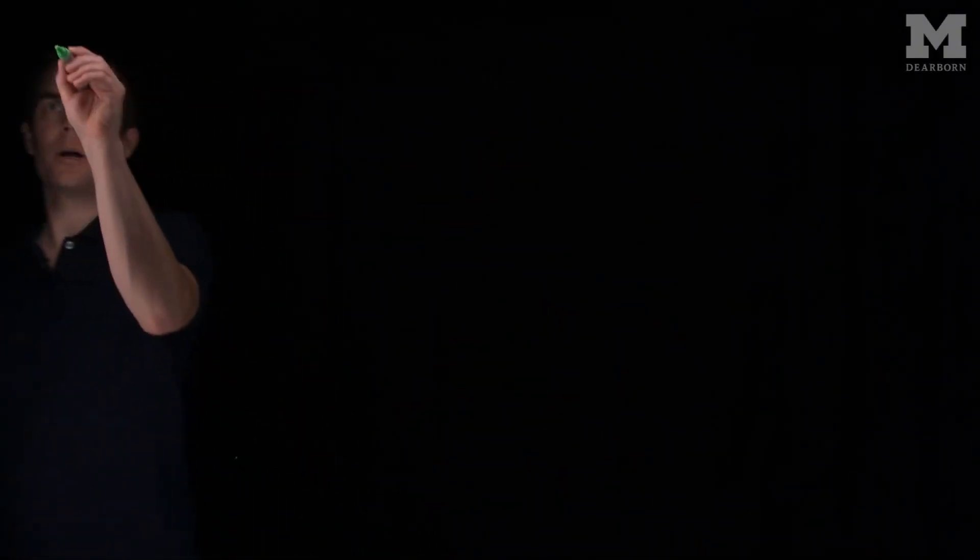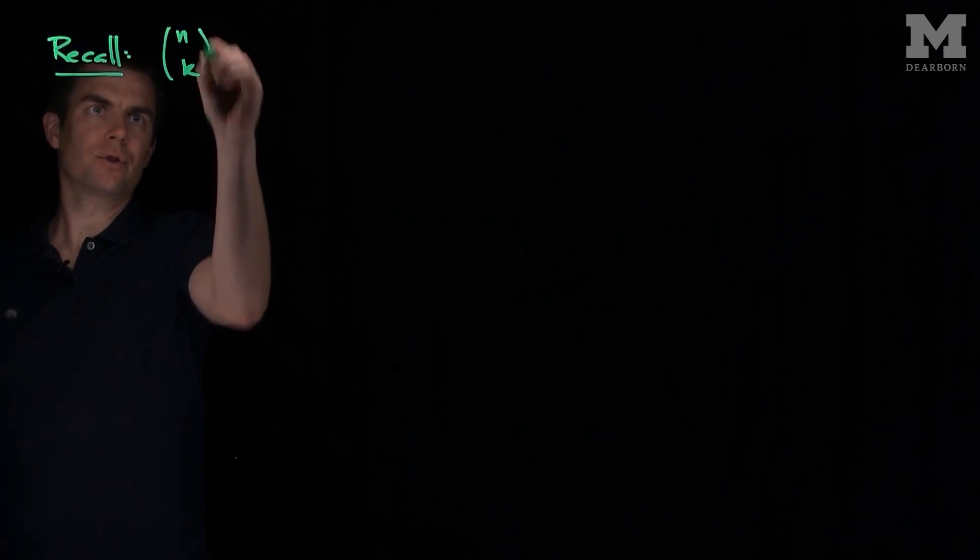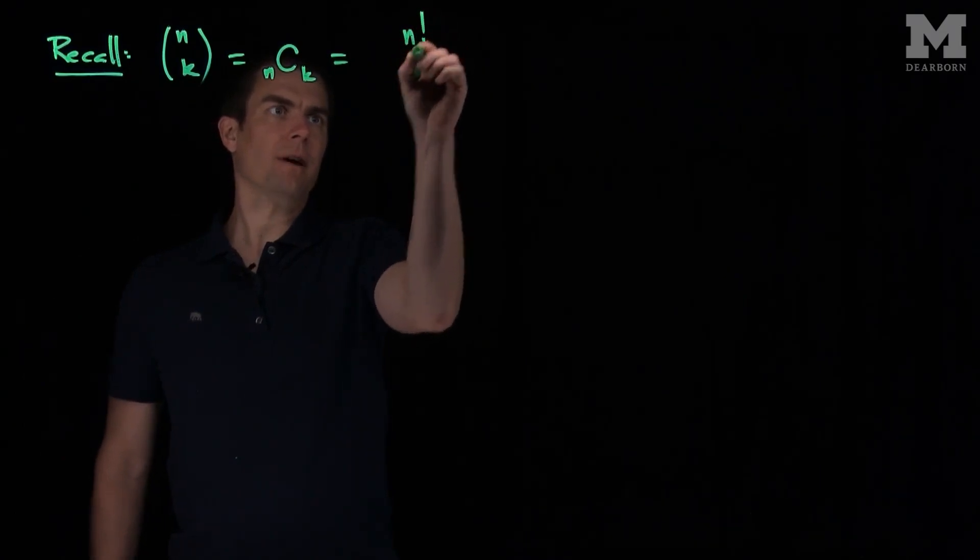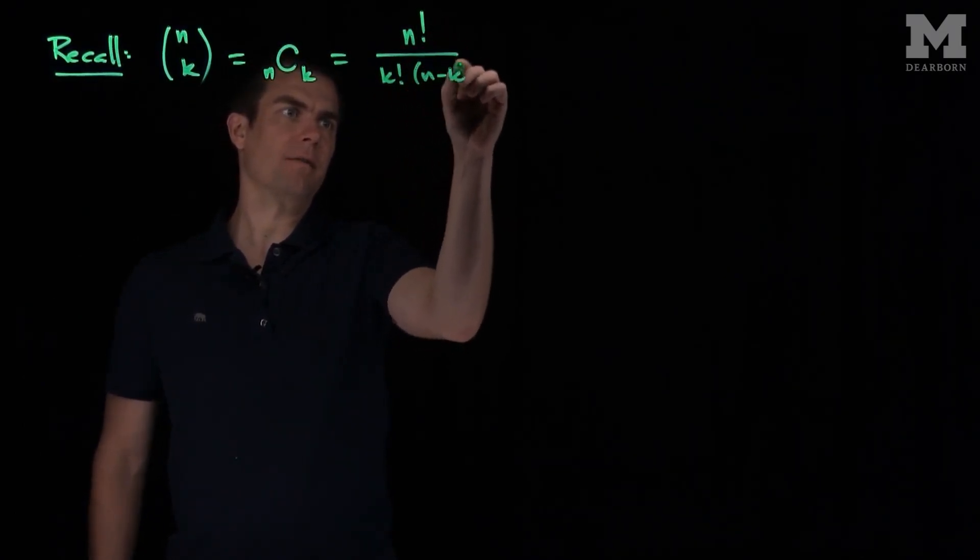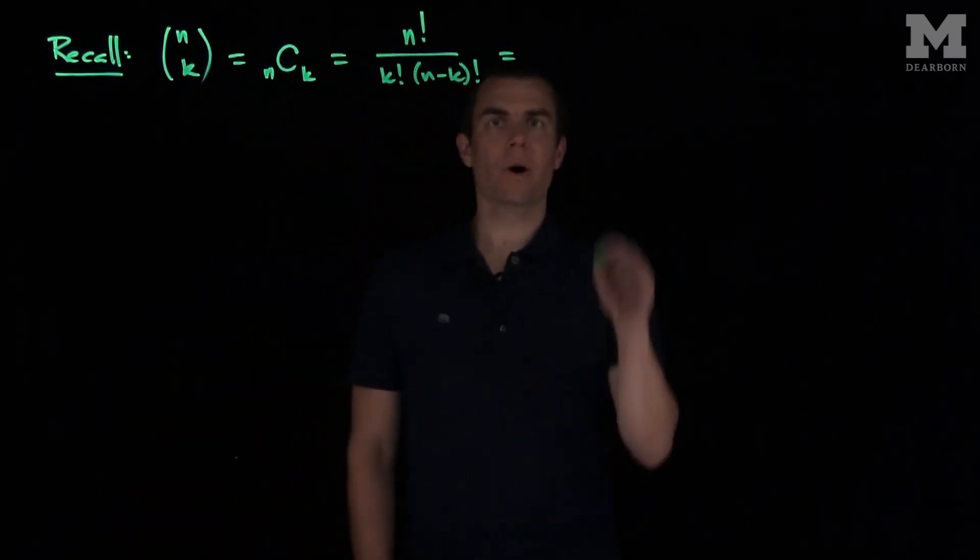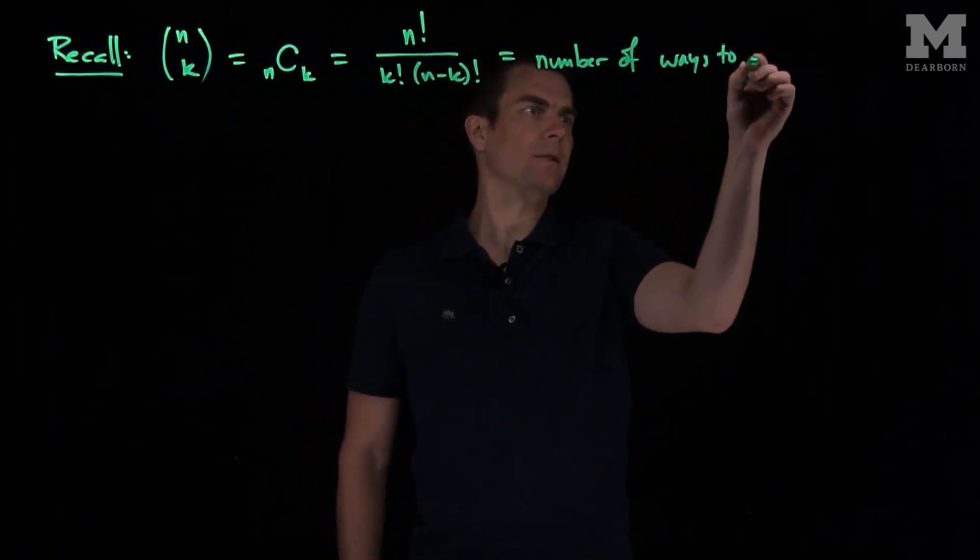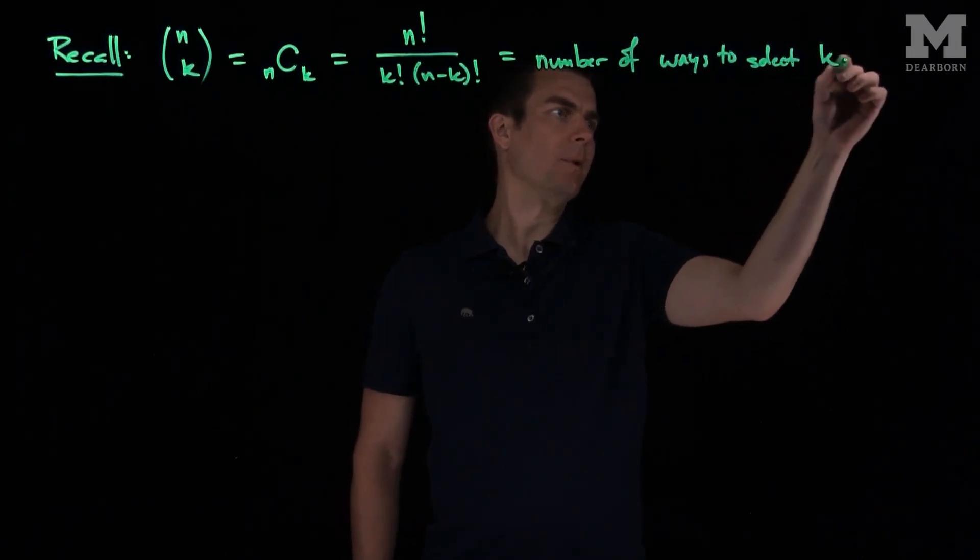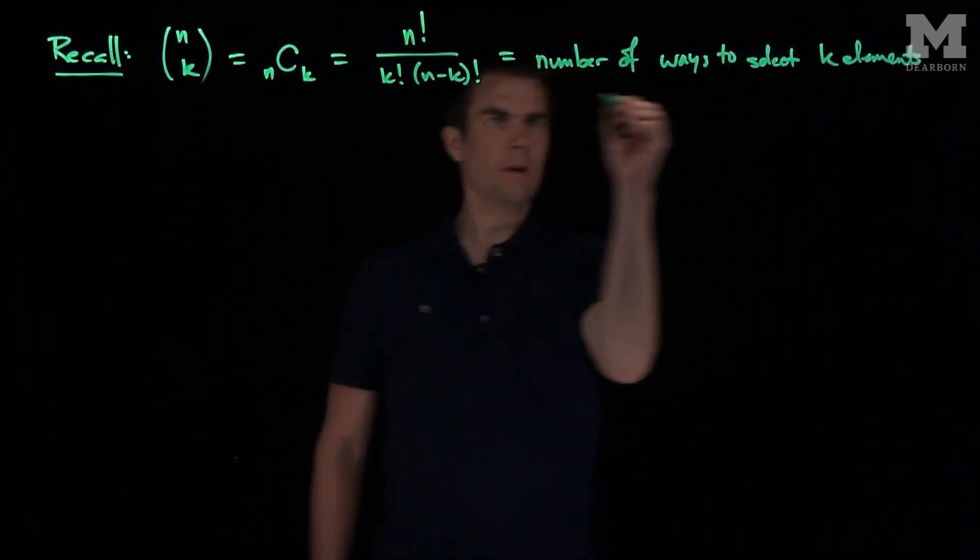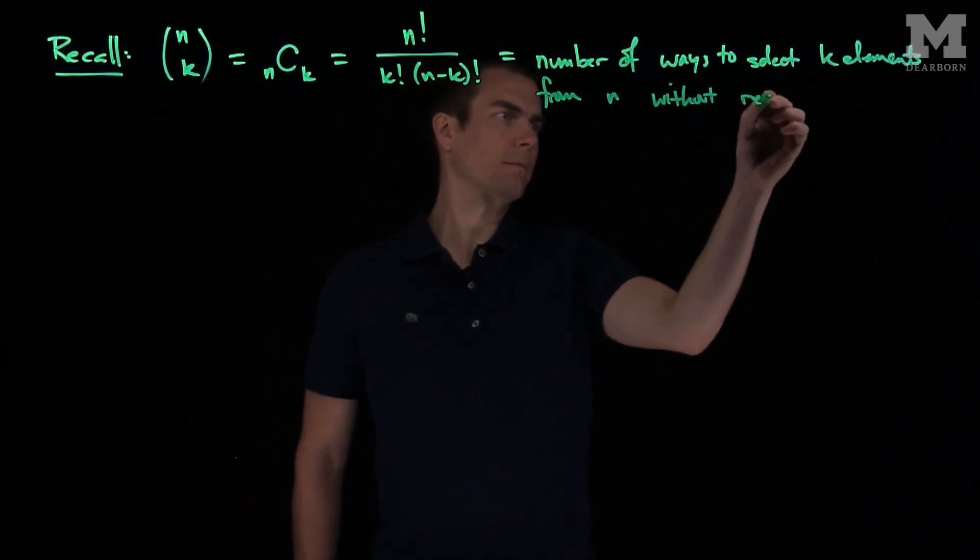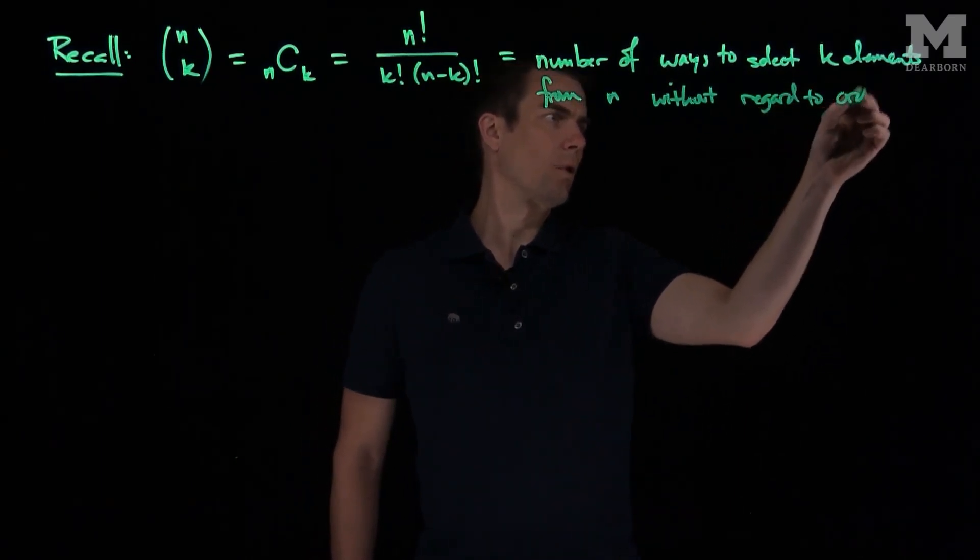Hello students, in this video we'll discuss several important properties of combinations. So we recall that n choose k, which is also written as C_k^n, is equal to n factorial over k factorial times (n-k) factorial. Combinatorially, this is the number of ways to select k elements from n without regard to order or arrangement.